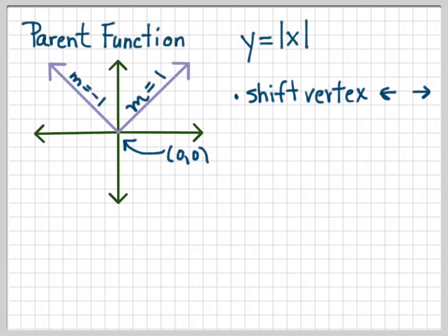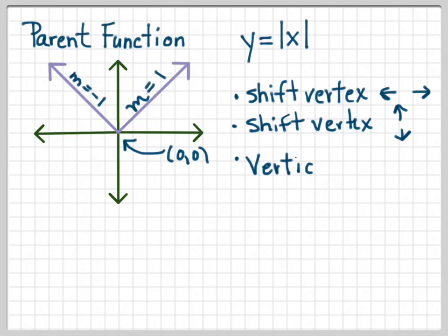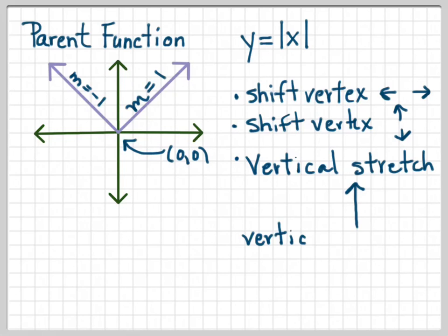We can do different things. We can shift the vertex to the left or to the right, or shift the vertex up or down. We can do a vertical stretch, which takes it like a piece of gum and stretches it in a vertical manner. Or we can do a vertical compression, which smushes it down some.